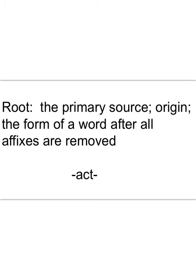The primary source of a word is its root — its origin — the form of a word after all affixes are removed. An affix would be a prefix or a suffix. So a word like 'act,' A-C-T, is a root. It has its own meaning, and if we add a prefix or a suffix to it, it creates a different meaning.